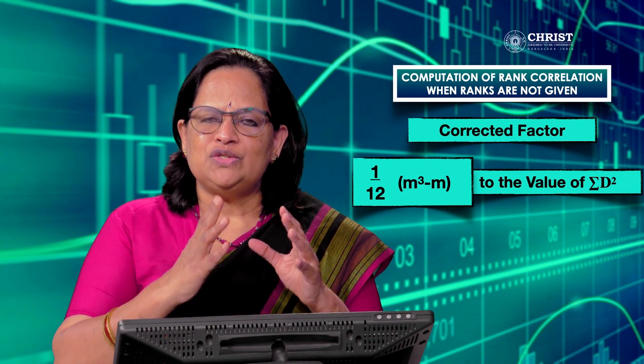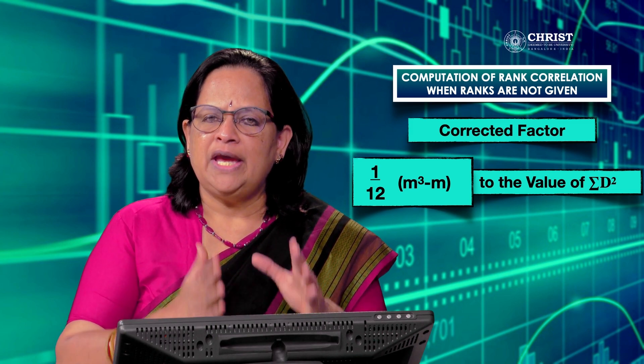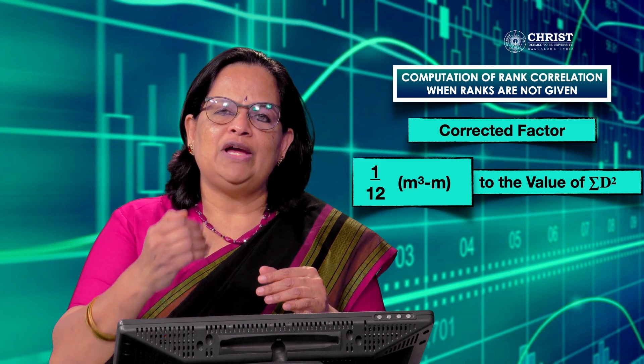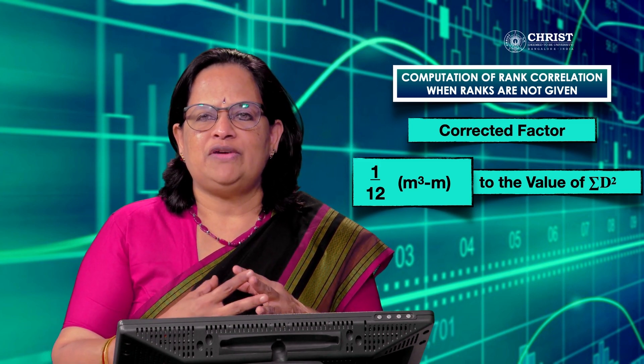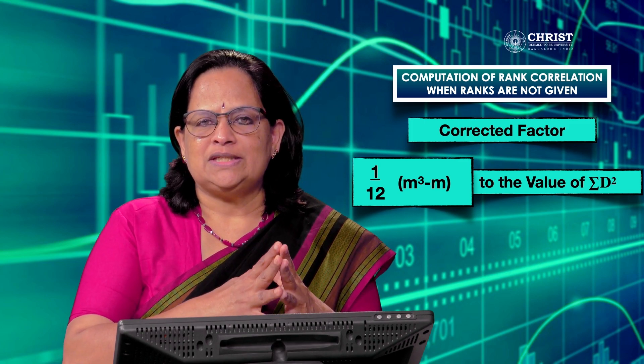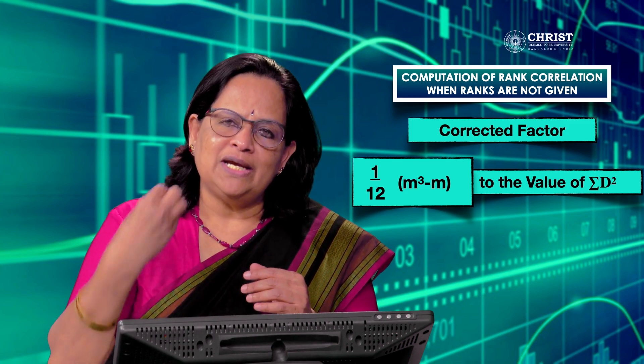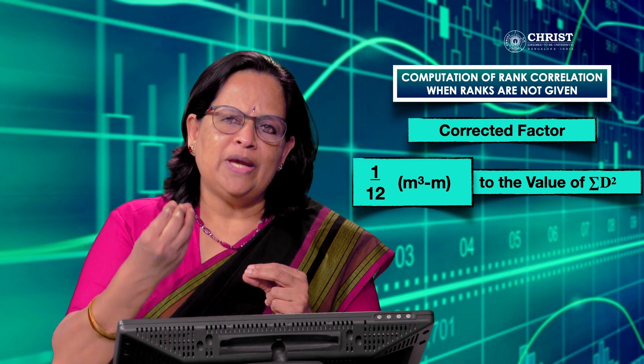For the formula for computation, you have to use a correction factor. The correction factor is (1/12) × (m³ - m). We add this to the value of sigma d². We know that rank correlation coefficient is computed as 1 minus 6·sigma·d² divided by (n³ - n). With the d² values, we add the correction factor. How many times this correction factor is added depends on how many values are repeated. If two values are repeated in x and y series, you will have two correction factors to add to sigma d². If three values are there, three correction factors — each being (1/12) × (m³ - m).